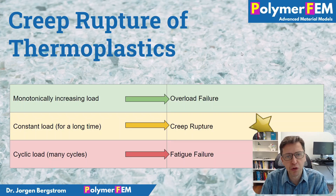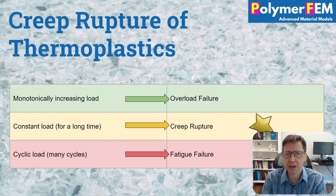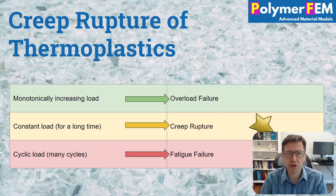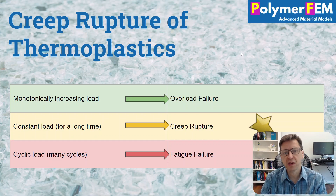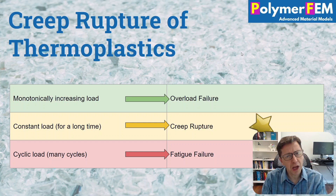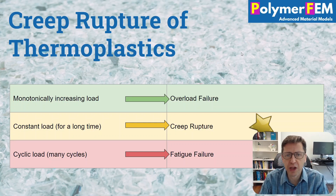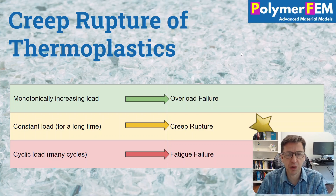Today I'm going to talk about creep rupture of thermoplastics. One way to divide failure behavior of polymers is to consider three cases. First, overload failure, where you keep loading a specimen at larger and larger loads until it breaks. Second, creep rupture, where a constant load is applied for a very long time — that's the focus today. Third, fatigue failure from a cyclically applied load.